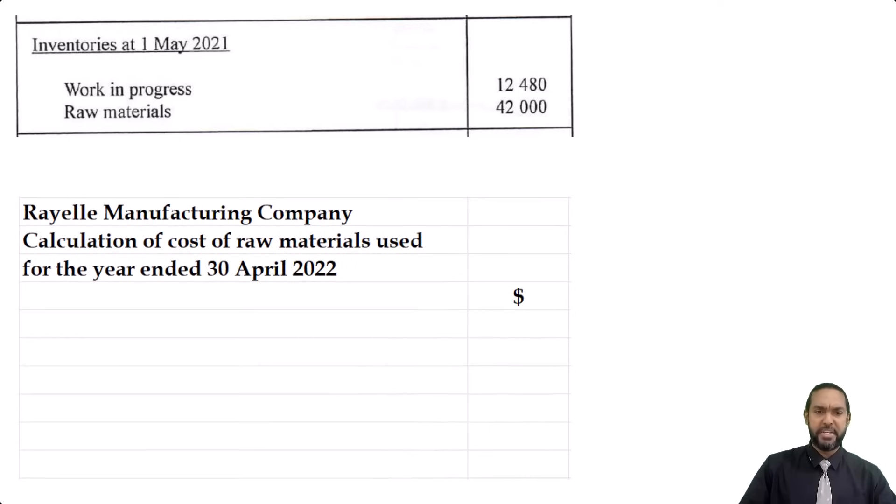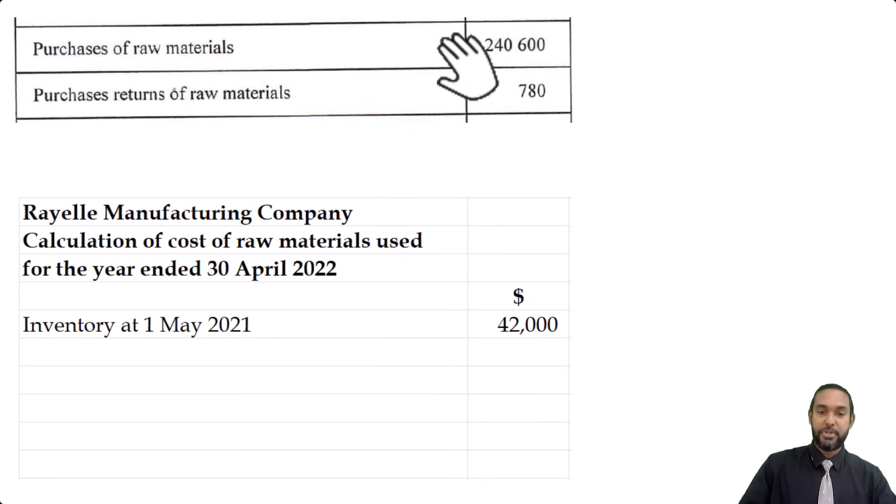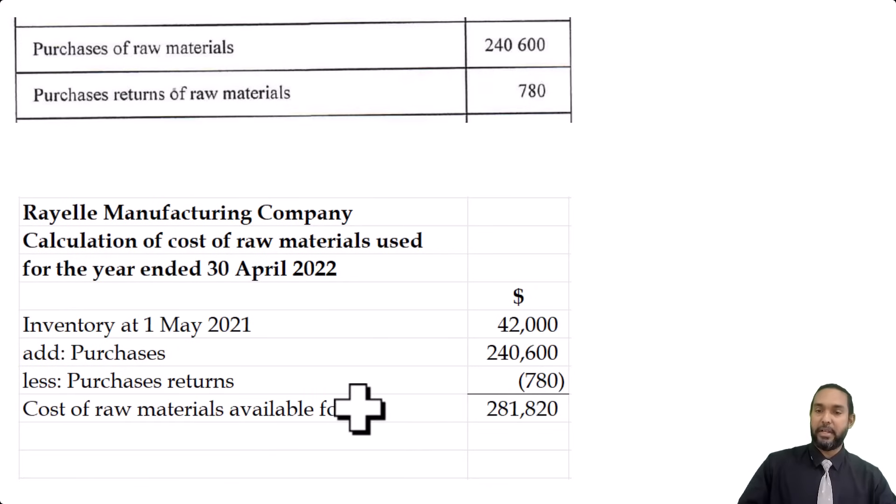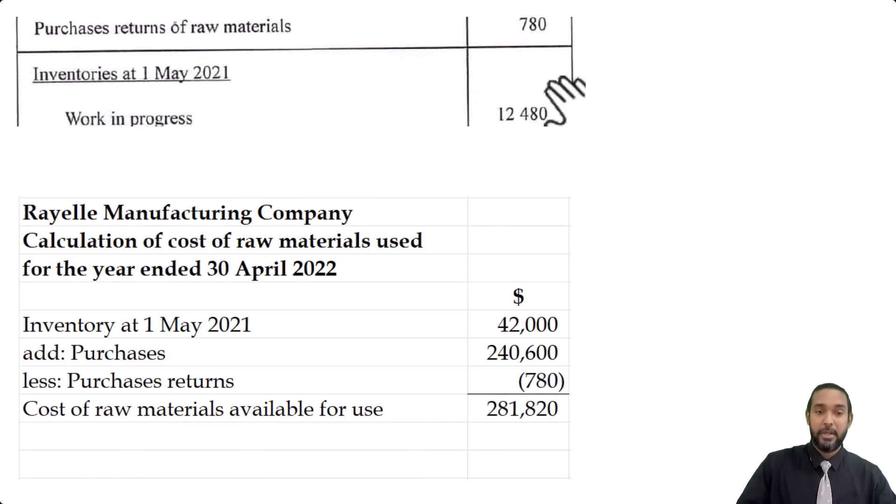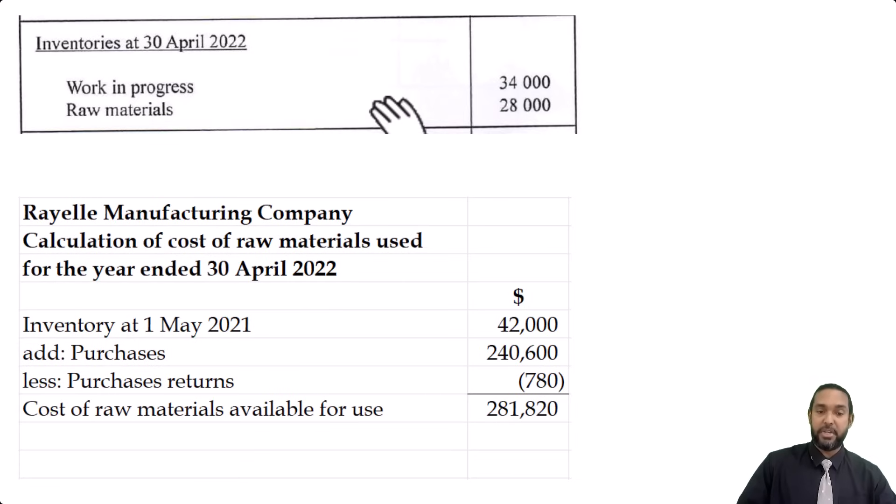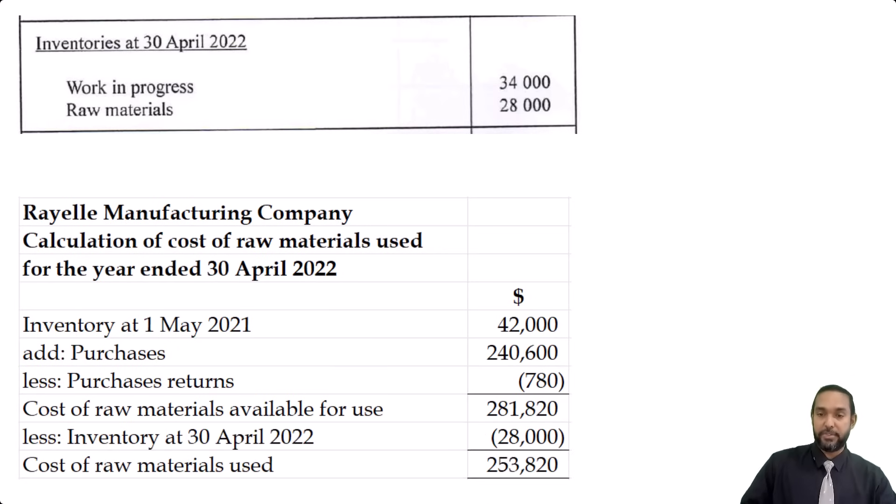Now, what we need first. Well, we could start with the opening stock of raw materials, which is the 42,000. Then we could add the purchases of 240,600 from which we could subtract the returns of 780. Now you could put a line for cost of materials available for use, but you don't have to. It's not mandatory. And the last thing we put is the 28,000 of closing raw materials. And we subtract that to give us the cost of raw materials used, 253,820. So that's it for that part.